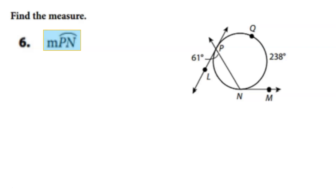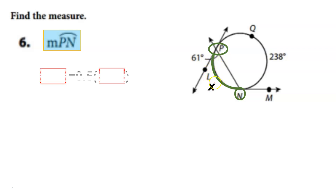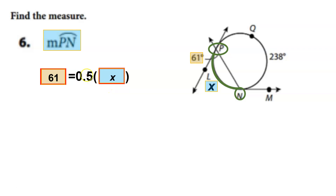On number 6, they ask us to find arc PN. We don't know what that arc is, so we'll use the variable X. The inside angle is given. Go ahead and place the values in the appropriate places — that would be 61 and X. To solve, we divide both sides by 0.5, and X equals 122. One student noted you could also just multiply by 2 — either works.